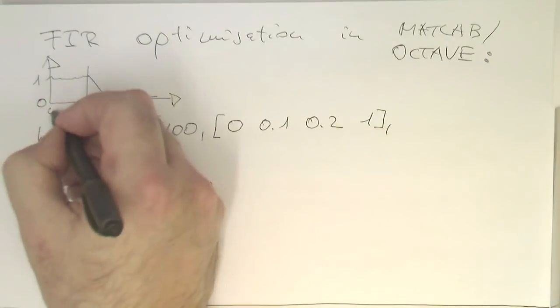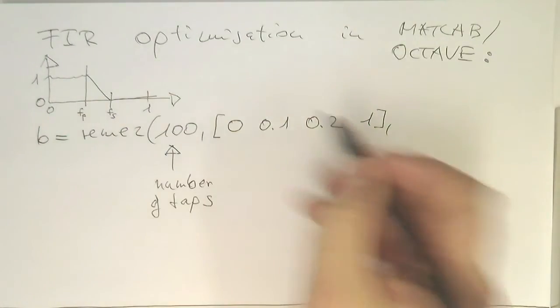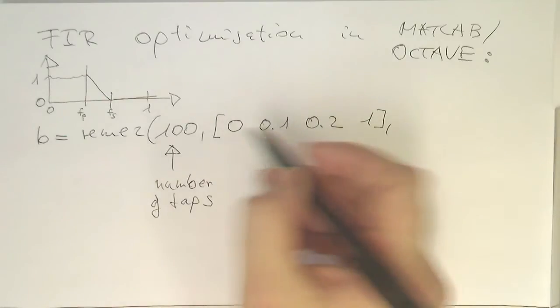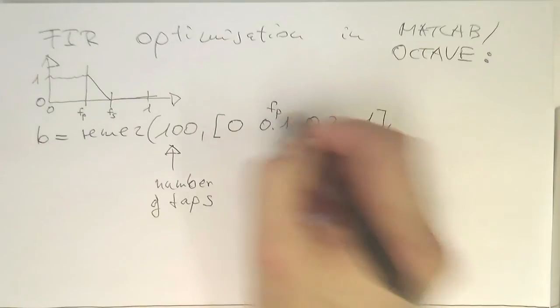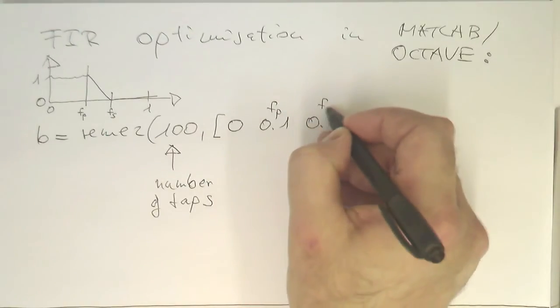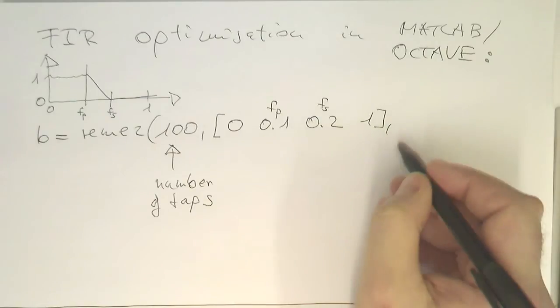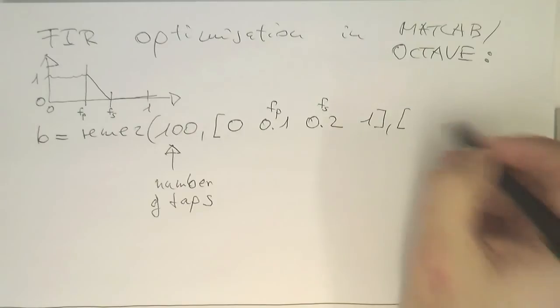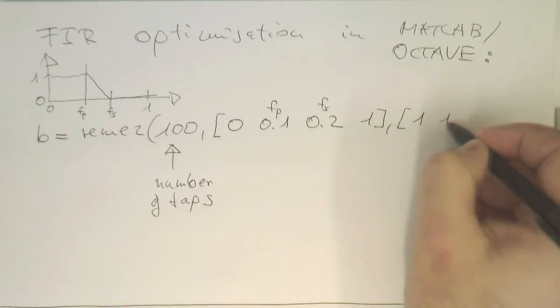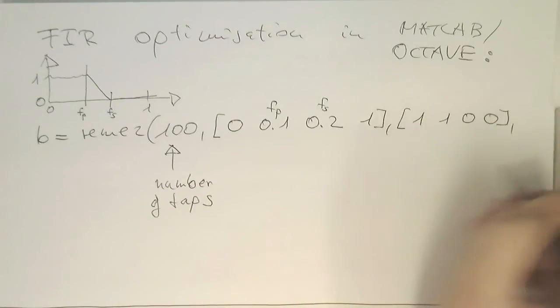This is here the 0, and this goes up to 1. Remember MATLAB convention. This is here our F-P, this is here our F-S, and this is here the 1. Now the next step is we are defining the amplitudes: 1, 1, 0, 0. And these are the amplitudes here.